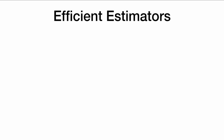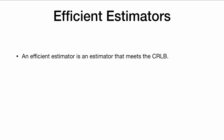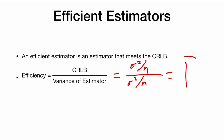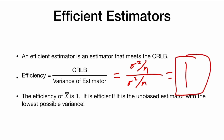This is related to the idea of efficiency. An efficient estimator is one that meets the Cramér-Rao lower bound. Efficiency is defined as the Cramér-Rao lower bound divided by the variance of the estimator. Our Cramér-Rao lower bound was sigma squared over n and the variance of x-bar is sigma squared over n, so the efficiency equals 1 — our estimator is efficient with 100% efficiency. The efficiency of x-bar is 1: it is the unbiased estimator with the lowest possible variance.